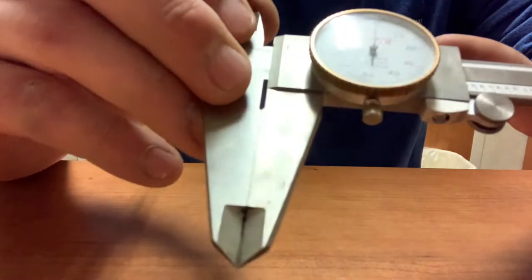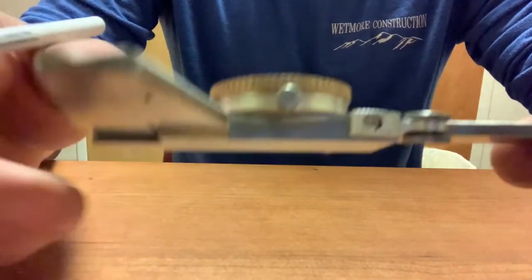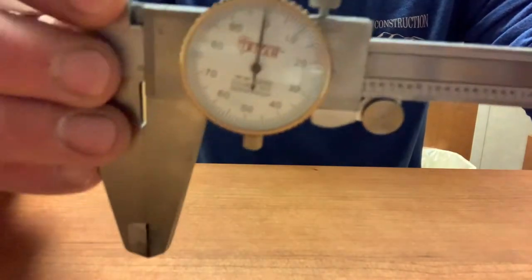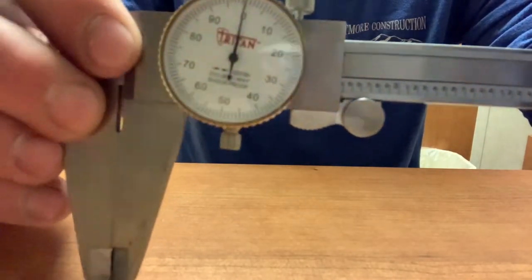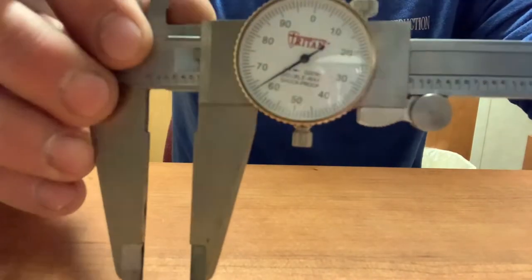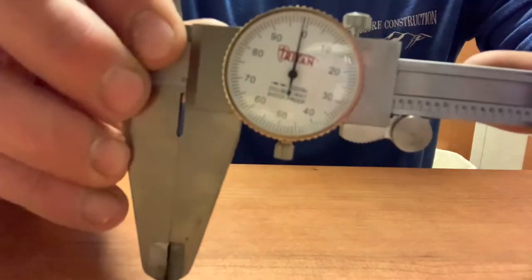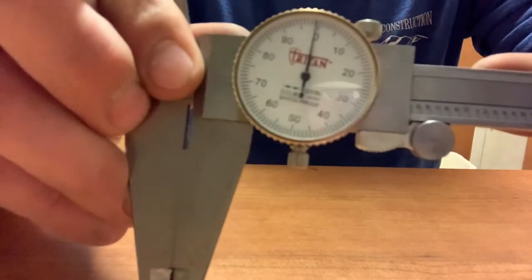So first you want to verify what kind of system your dial caliper is. There's metric, there's veneer, and then there's standard. So this is a standard dial caliper because I live in America and it has to be different to make everything really complicated.